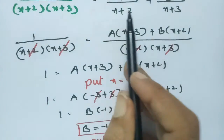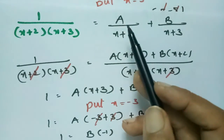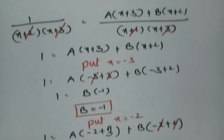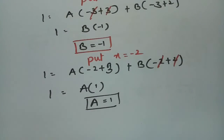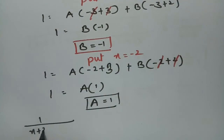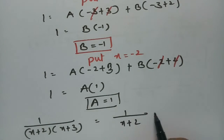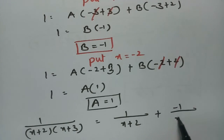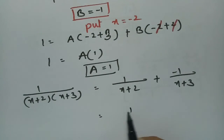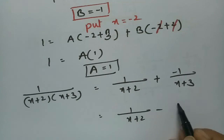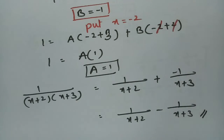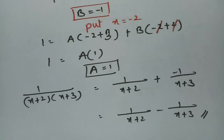Now I substitute A and B back: 1 by (x plus 2)(x plus 3) = 1 by (x plus 2) minus 1 by (x plus 3). This is how we solve it — very simple. I will be posting many more videos related to this series, so please practice with those — it will be a great help for your preparation. Thank you so much.